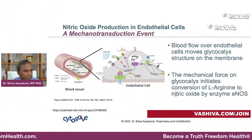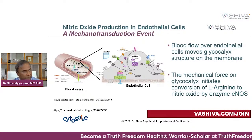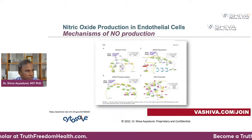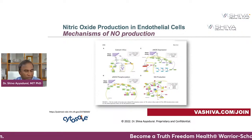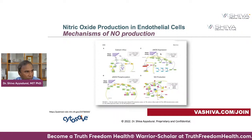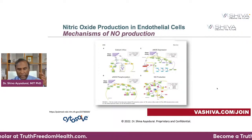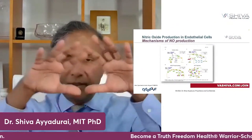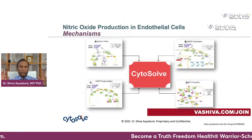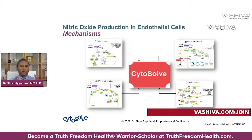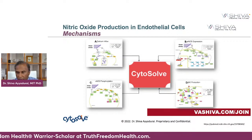Blood flow over the endothelial moves the glycocalyx structure on the membrane, and the mechanical forces on the glycocalyx initiate ENOS, which is used to convert the arginine to nitric oxide. The body is very interesting machinery — you exercise, you have the right food, and through these molecular machines, arginine mediated by ENOS gets converted to nitric oxide. If you look at all the literature — thousands of papers — you'll see all these little chemical pathways, little jigsaw puzzles of nitric oxide. Connecting all these dots gives you a holistic understanding of nitric oxide release, and CytoSolve was actually able to connect those dots.